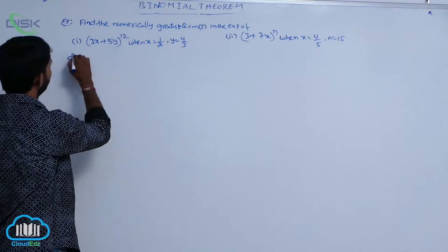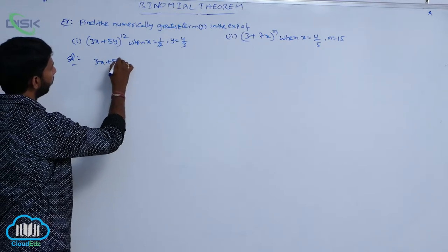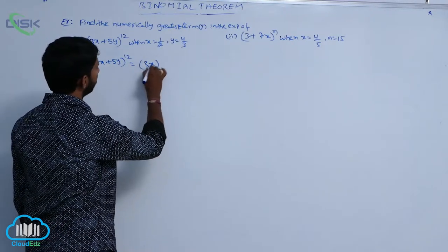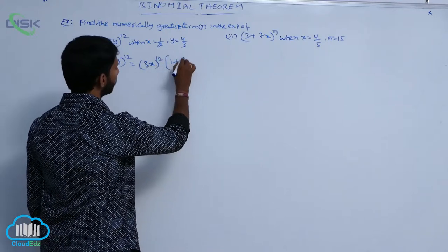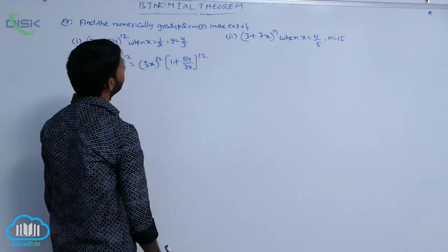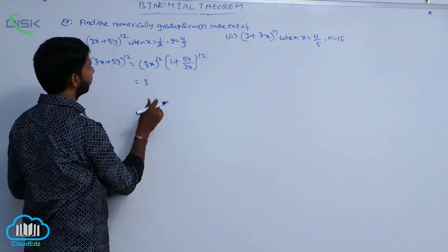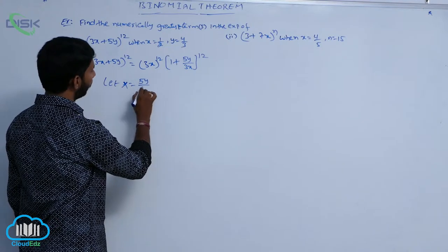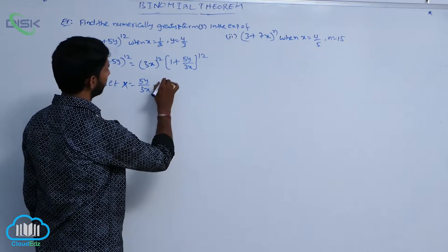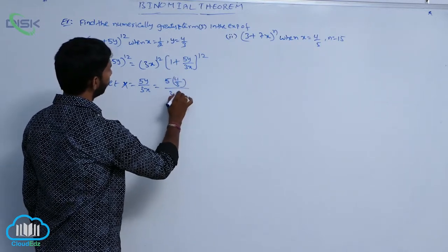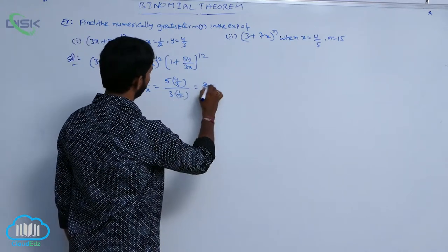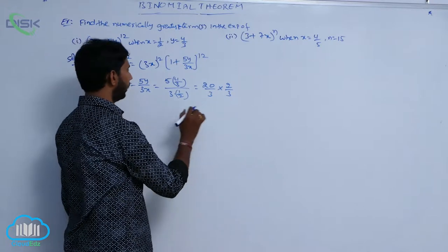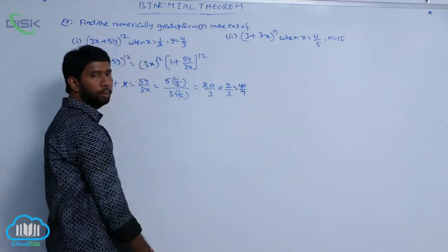For the first problem, (3x + 5y)^12 is converted into the form (1 + X)^n by taking 3x as common. It becomes (3x)^12 × (1 + 5y/3x)^12. Let capital X = 5y/3x. Substituting the values: X = (5 × 4/3) / (3 × 1/2) = (20/3) × (2/3) = 40/9.